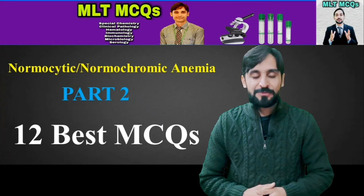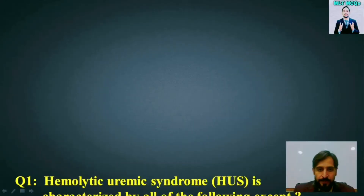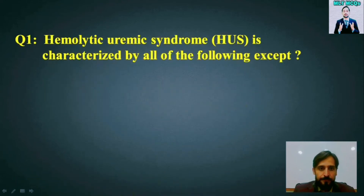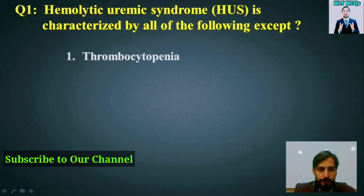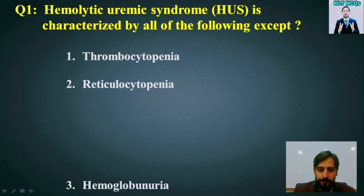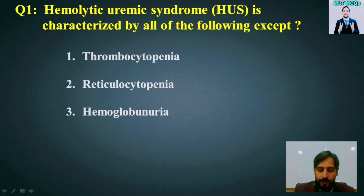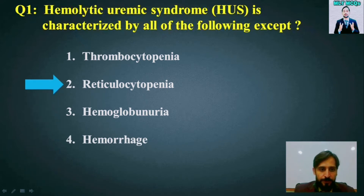MCQ number 1: Hemolytic uremic syndrome (HUS) is characterized by all of the following except. Options are: thrombocytopenia, reticulocytopenia, hemoglobinuria, or hemorrhage. The right answer is option number 2 — reticulocytopenia.